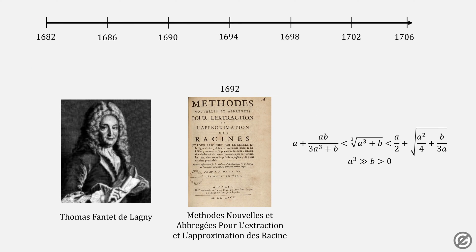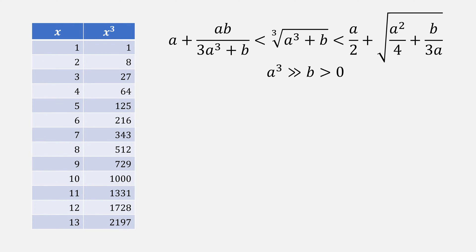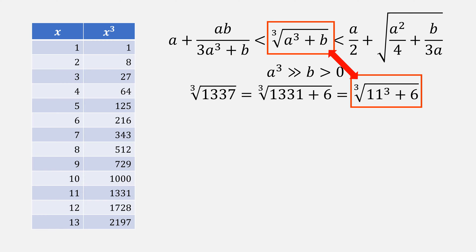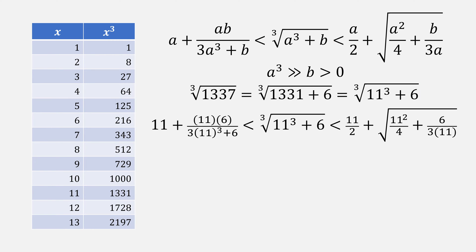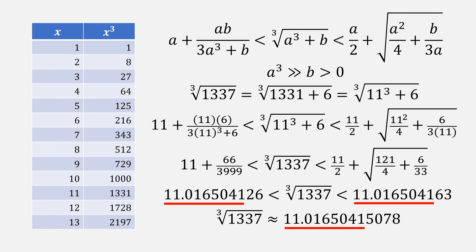In 1692, Delauny found a method for bounding the intervals of any cube root given by this equation. By using this set of conditions, we can find a pretty good interval for the cube root of 1337 by letting a be the value of 11 and b being the value of 6. Simply plug everything in, and we get these numbers that bound the cube root. The cube root is actually this number, which matches very closely.